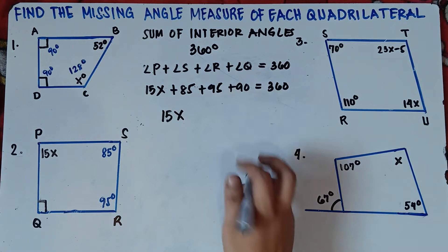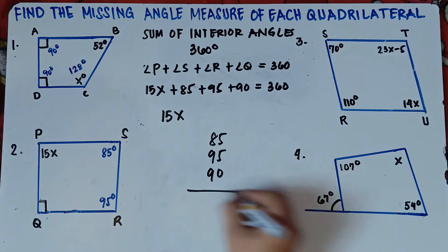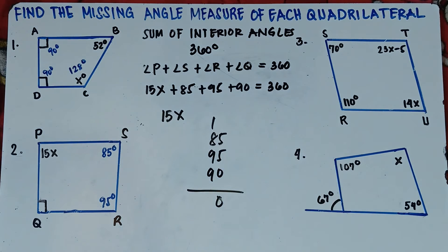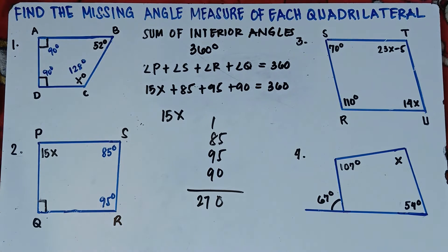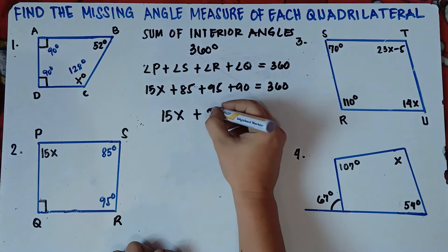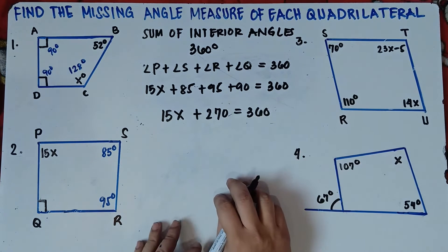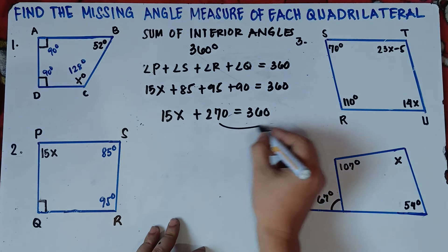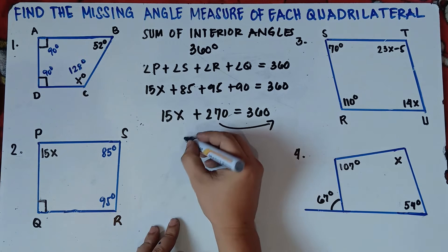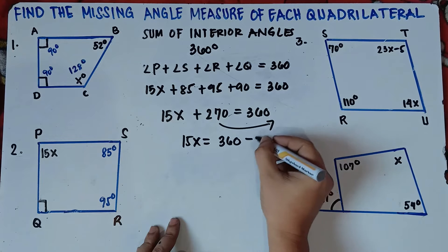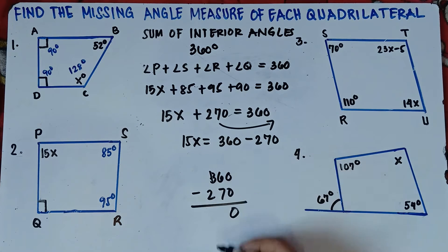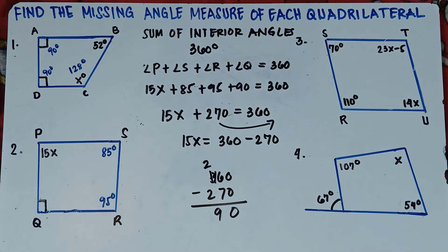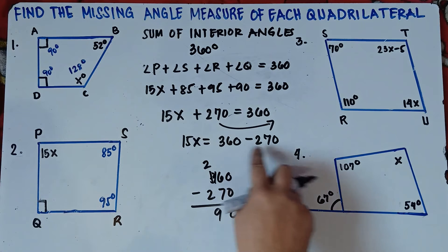85 plus 95 plus 90. So 5 plus 5 is 10, zero carry 1. Then 1 plus 8 is 9, 9 plus 9 is 18, plus 9 is 27. So this will be 270. So 15x plus 270 equals 360. Transpose 270 from left to right: 15x equals 360 minus 270. So 360 minus 270, that's 90.